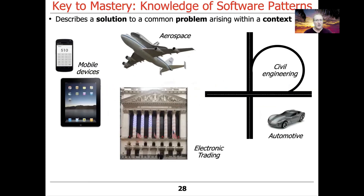So what is a software pattern? A software pattern is a description that captures a solution to a common problem that arises within a particular context. There are many different contexts in which software patterns arise — the context of mobile devices like Android or iOS, electronic trading, aerospace, healthcare, and many other domains that have patterns reoccurring within certain contexts to solve very recurring design problems.